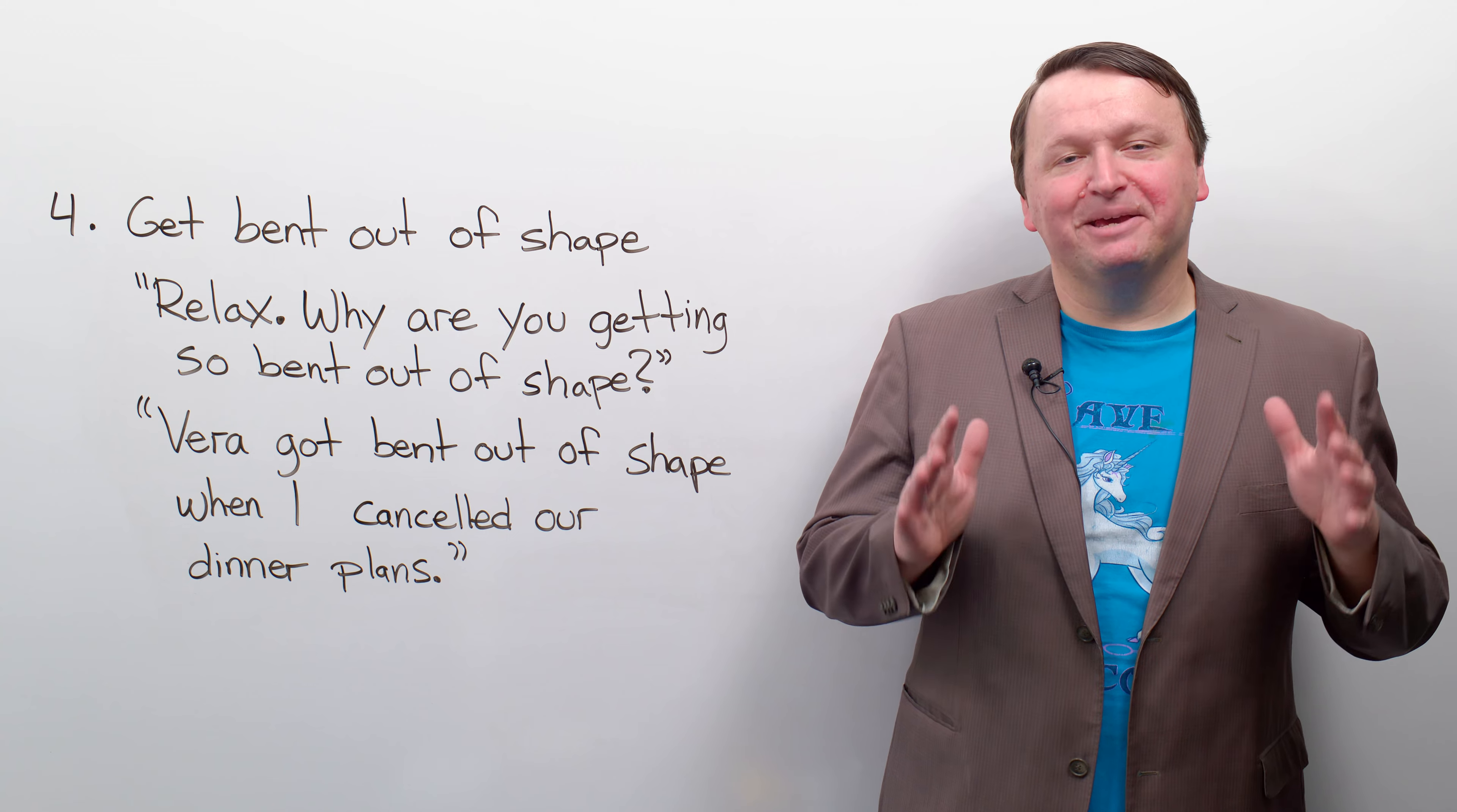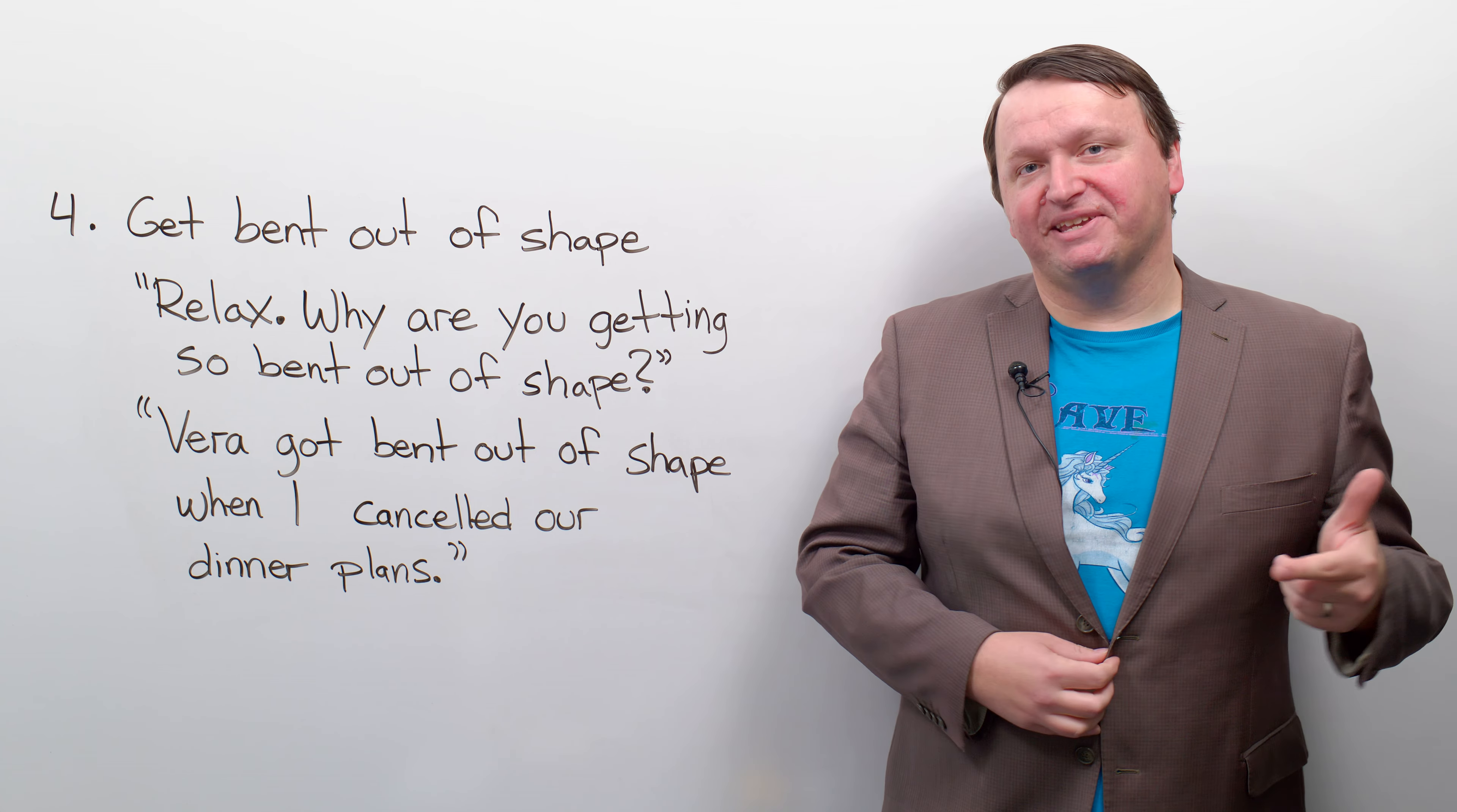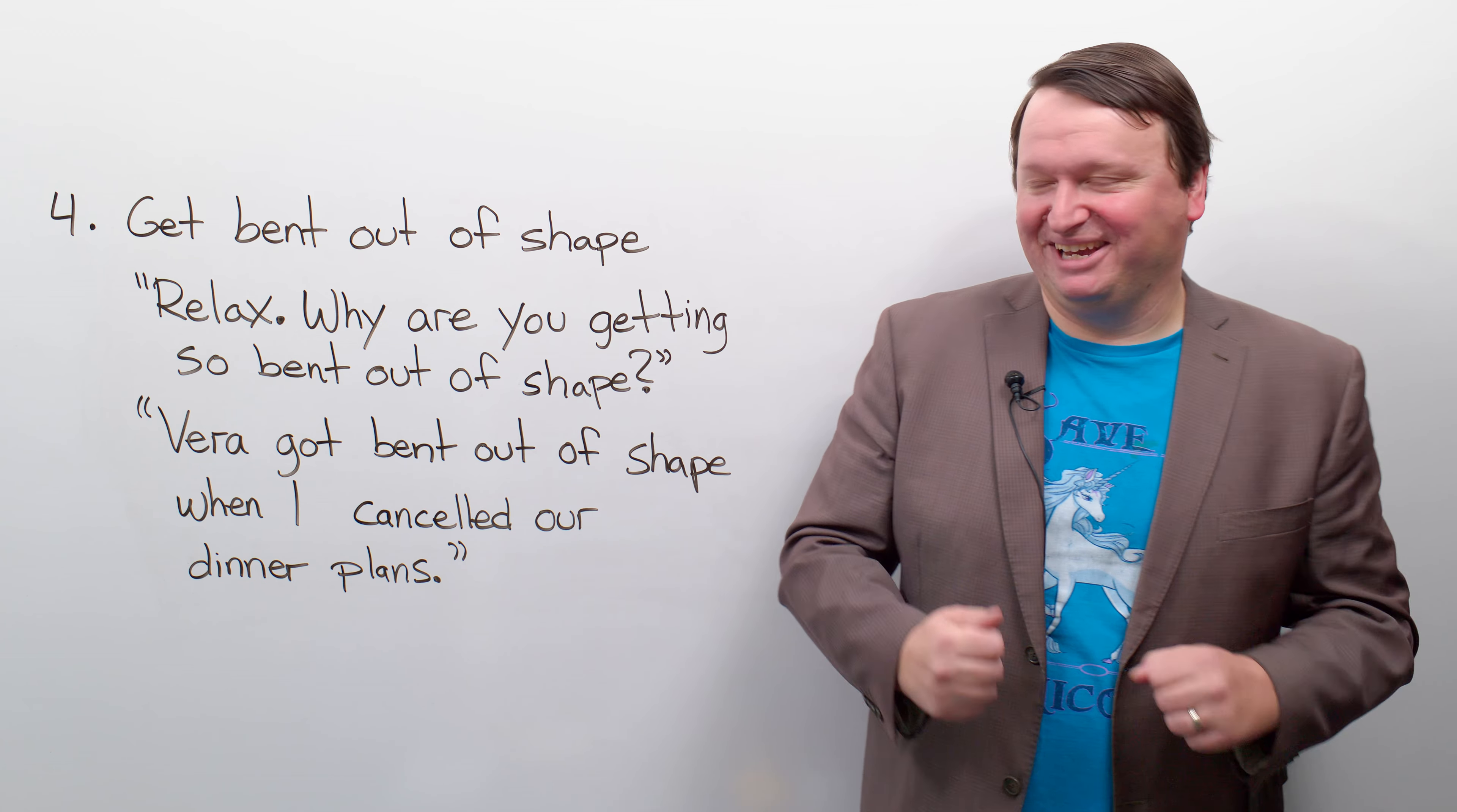Number four, get bent out of shape. If you get bent out of shape, you become angry, upset, or anxious about something. A common variation of this idiom is get all bent out of shape. Like every part of you becomes just a little bit unsettled, I will say.